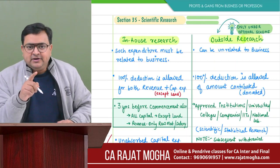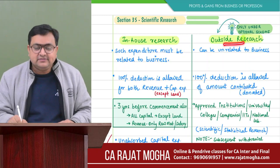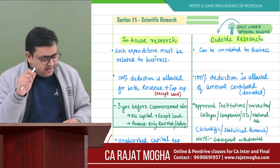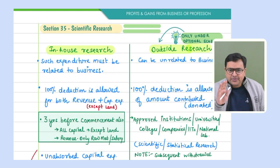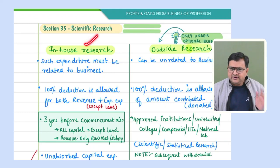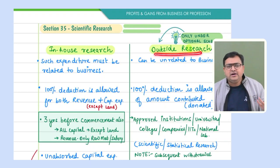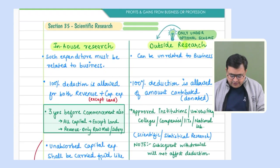An important point, especially for MCQs: outside research deduction is available only under the optional tax scheme. If the assessee is following the default tax regime, outside research deduction is not allowed. In-house research is allowed in both regimes, but outside research is only under the optional scheme - not under the default scheme.